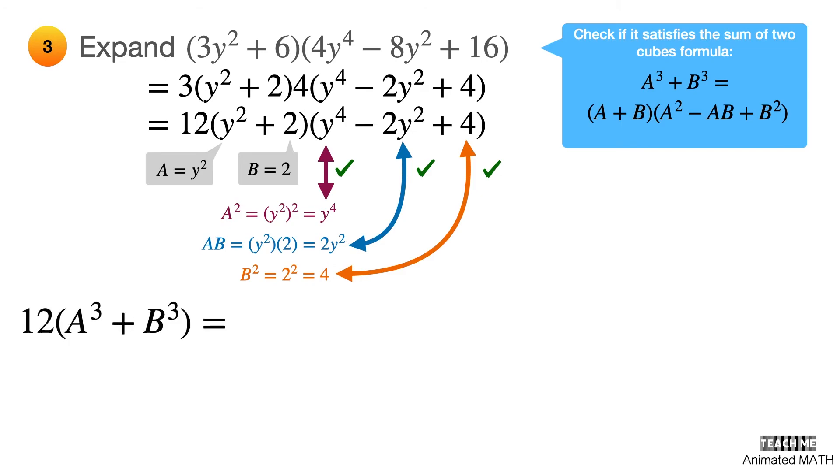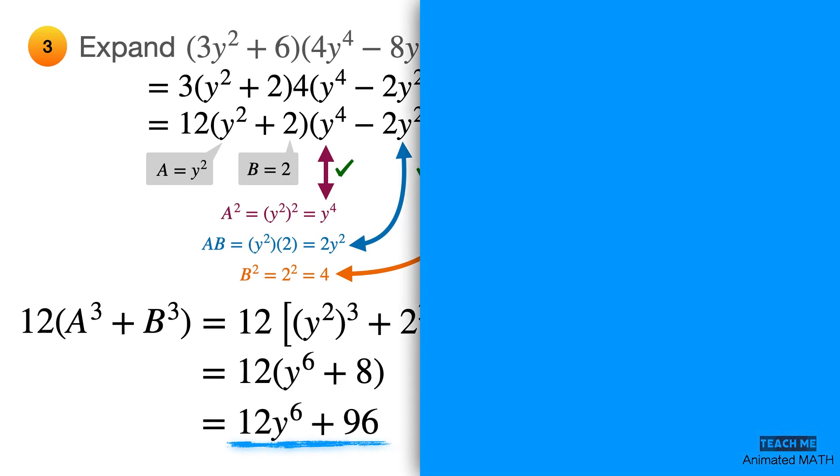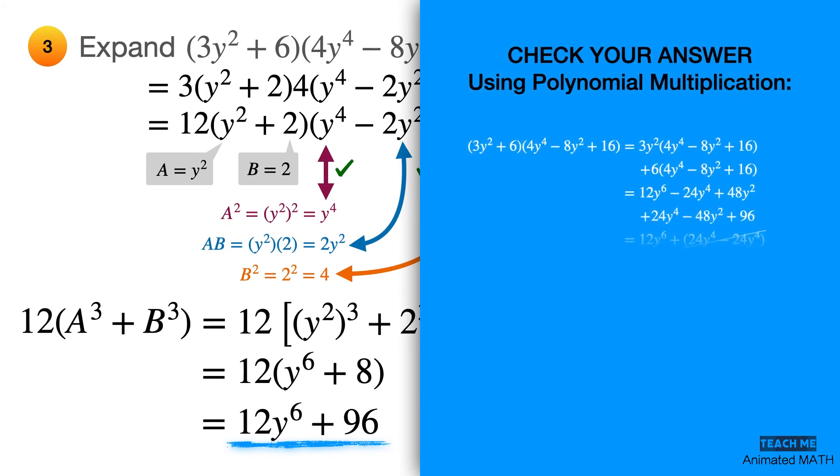Compute for the final answer by substituting y squared and 2 for a and b. The final answer is 12y raised to 6 plus 96. Check it using polynomial multiplication, and you'll see that the final answer is the same.